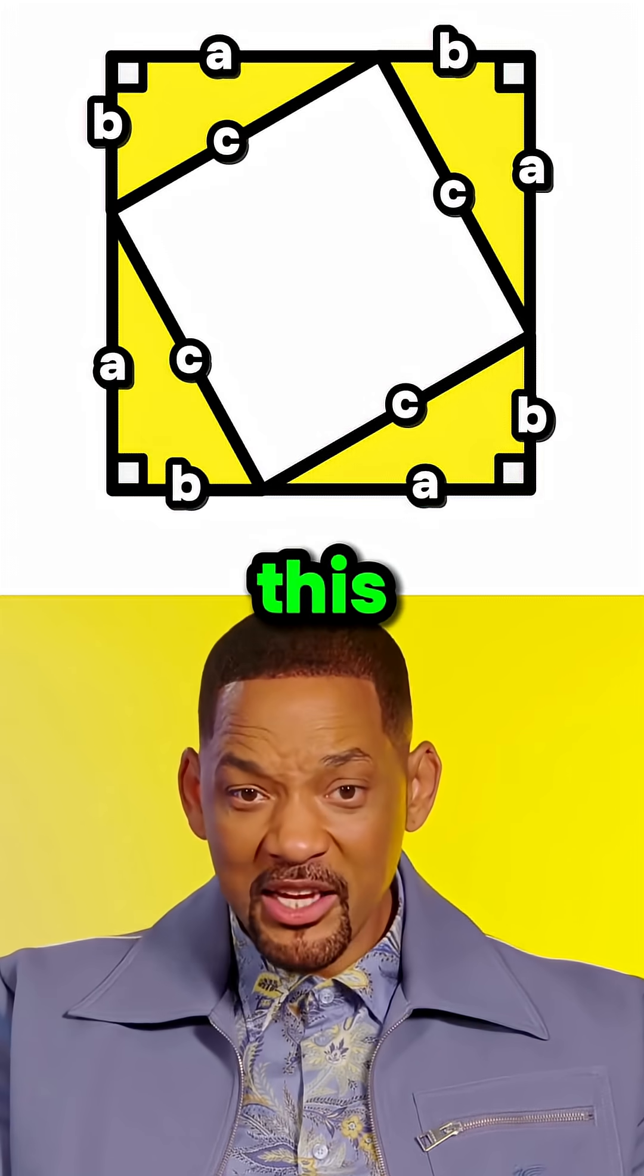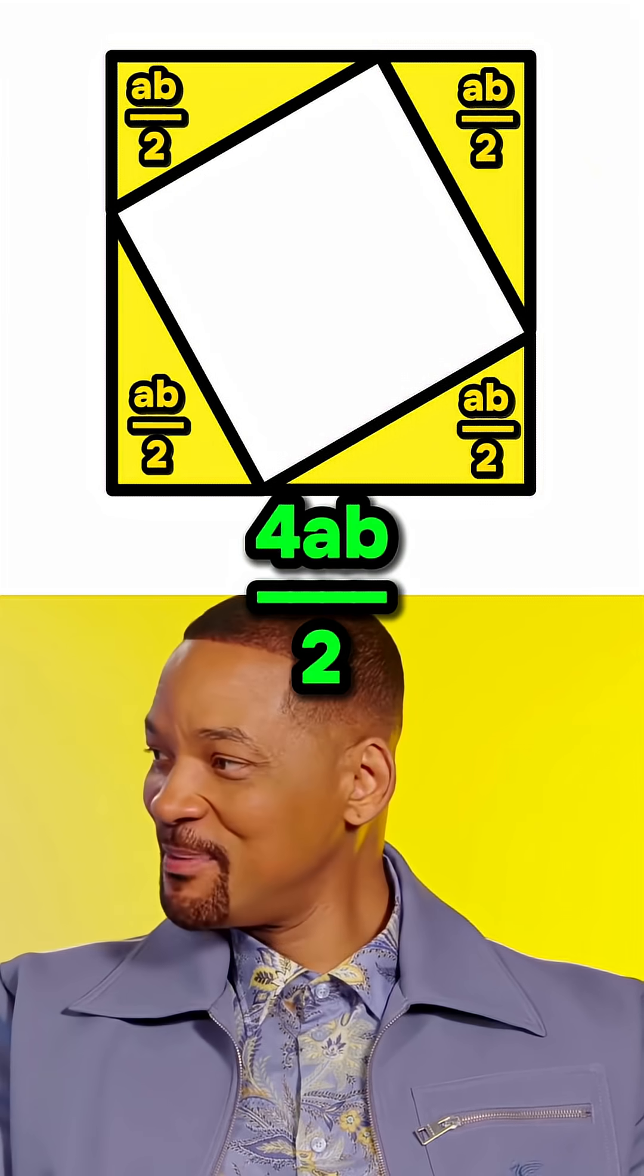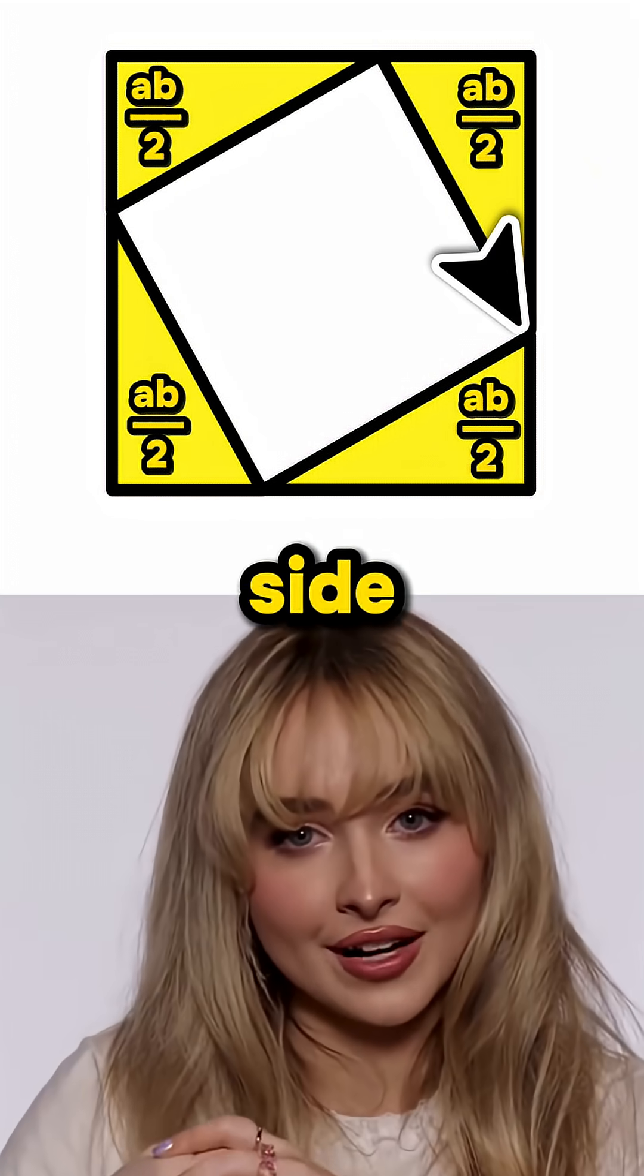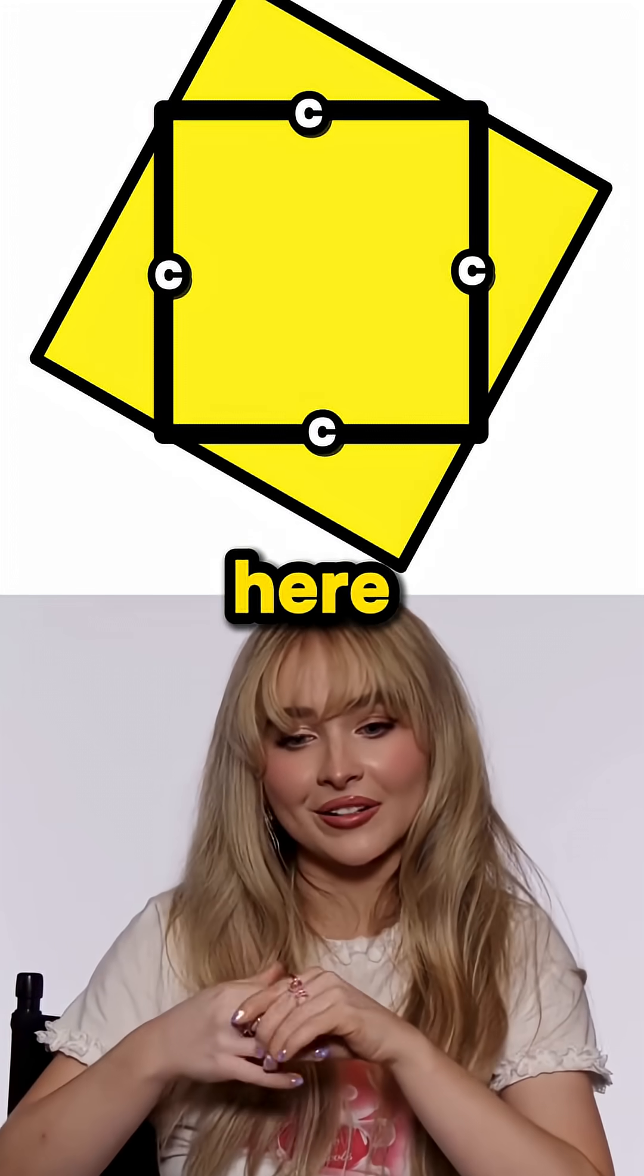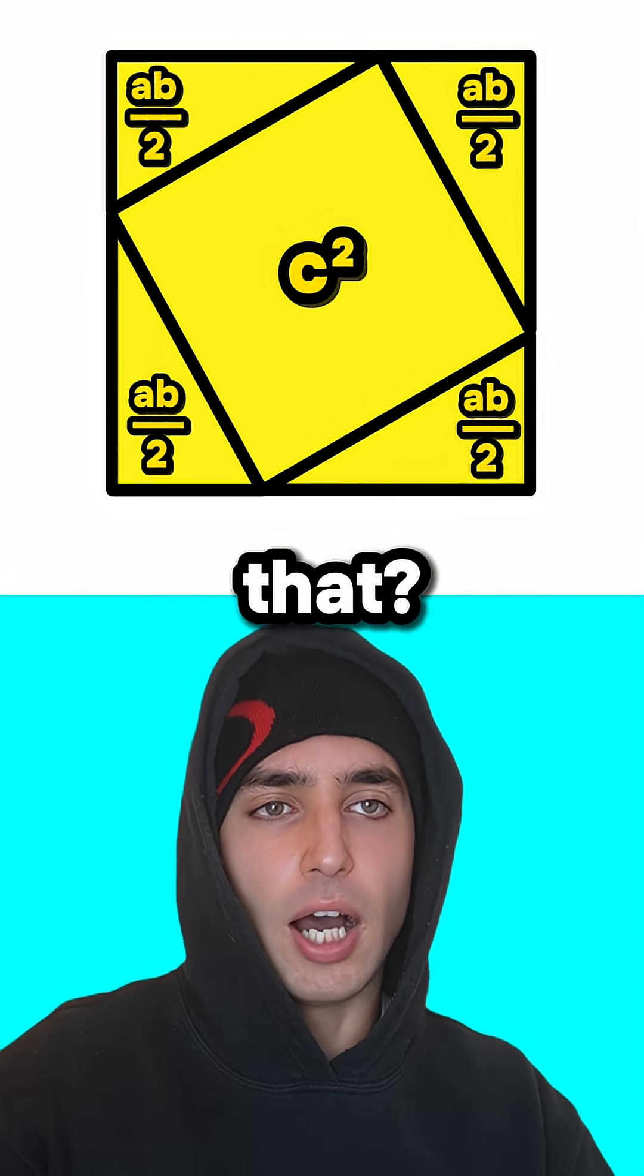So if we have four of these arranged like this, their total area would be four AB over two. And remember, the long side of each triangle has length C. That'd mean this square inside here has area C squared. Okay, but why did we just do that?